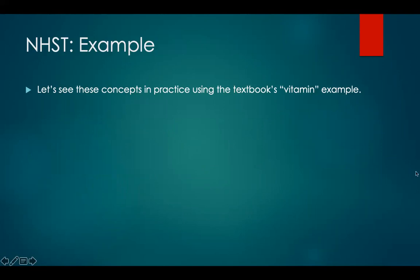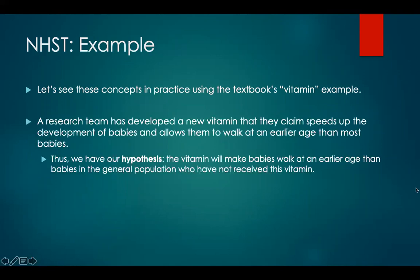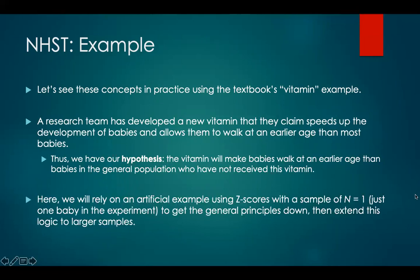There's an example in the textbook — the vitamin example — and we're going to use this to lay some foundation and put these concepts into practice. Here's the example: a research team has developed a new vitamin that they claim speeds up the development of babies, allowing them to walk at an earlier age than most babies. Thus, we have our hypothesis: the vitamin will make babies walk at an earlier age than babies in the general population who have not received this vitamin. We're going to use an artificial sample using z-scores with a sample of n equals 1, meaning just one baby in the experiment.